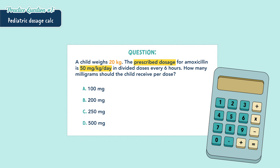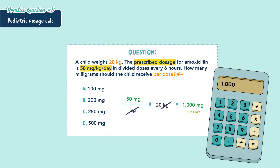So we can plug in our information. 50 milligrams per kilogram times 20 kilograms equals a thousand. But to get the proper units we can cross out kilograms, leaving us with a thousand milligrams per day. Remember, that's what the prescription gives us here — per day.